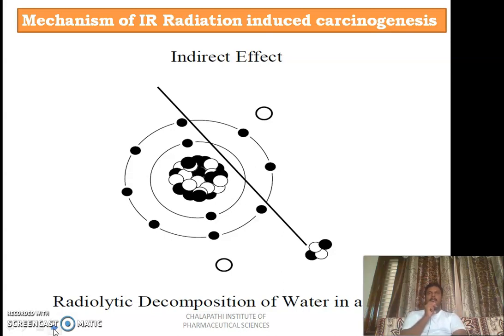Coming to the indirect mechanism, as we discussed in the physical process of cell injury regarding the formation of free radicals: since 80 percent of the cell is made up of water, whenever radiation hits the water molecule, it results in the development of hydroxyl free radicals. Those free radicals have an unpaired electron in their outer orbit and search for an electron rich substance to grab an electron.